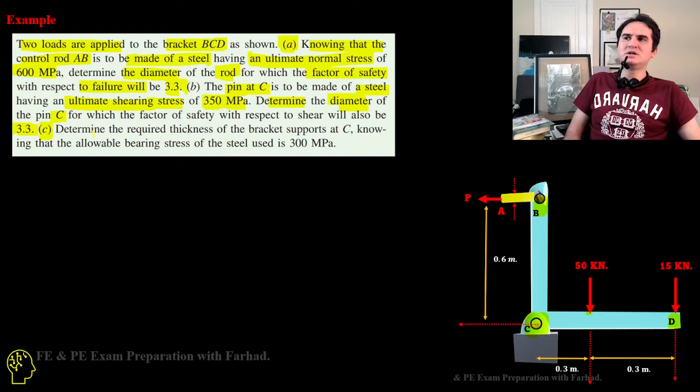In the last section, we want to determine the required thickness of the bracket supports at C if we know the bearing stress of steel is 300 MPa. Let's go through them one by one in this interesting example of shear, bearing, shearing, and normal stresses.